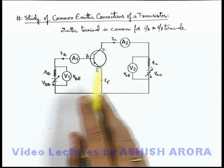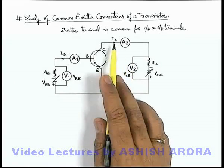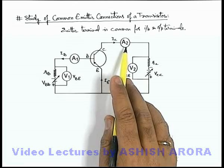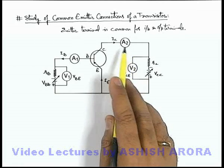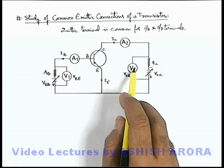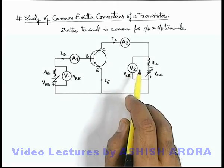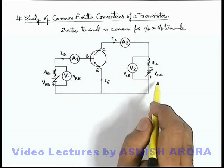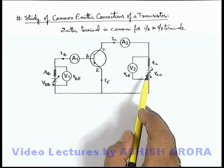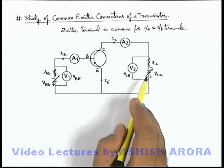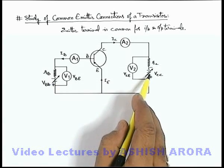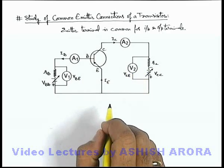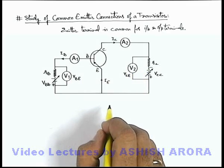Similarly, to measure output current and voltage — that is, IC and collector-emitter voltage — we keep two devices, ammeter A2 and voltmeter V2, in the circuit. To keep the collector junction reverse biased, we put a battery VCC. The batteries are variable voltage sources, which can be used to change the polarity as well as the potential difference across the junctions.